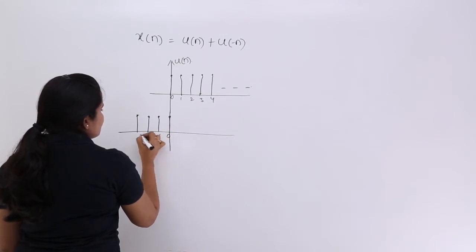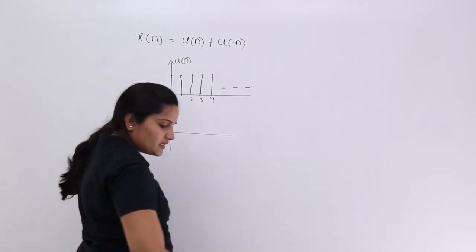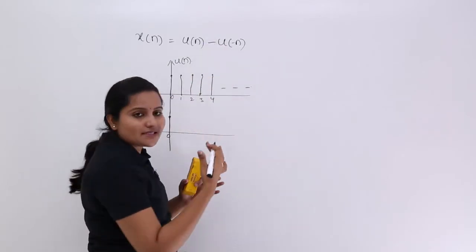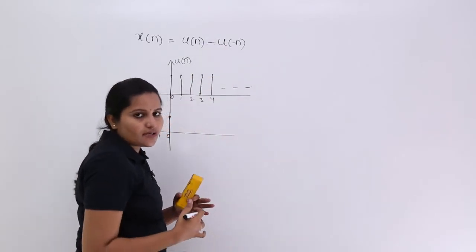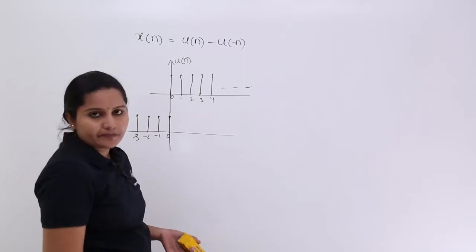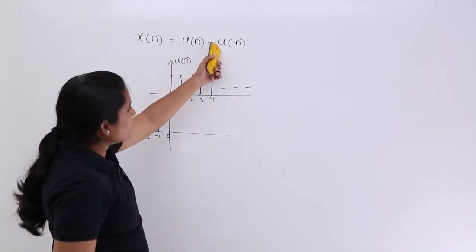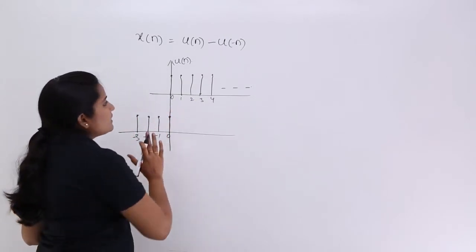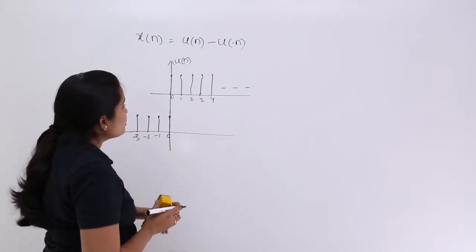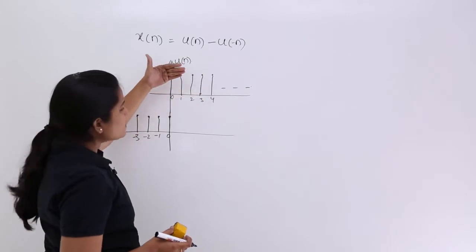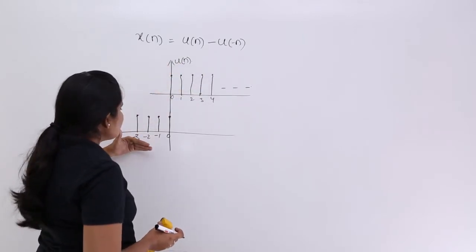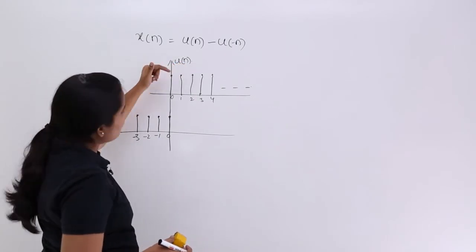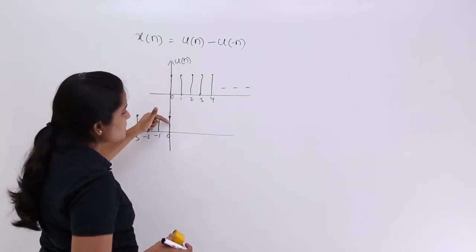So from 0, minus 1, minus 2, minus 3 like that. For example, if you consider subtracting — if you subtract u(n) minus u(-n) — whatever samples we are having, those are going to subtract. That means from minus 3 to 0, the samples are going to subtract. In the subtraction process you are going to get 1 minus 1.